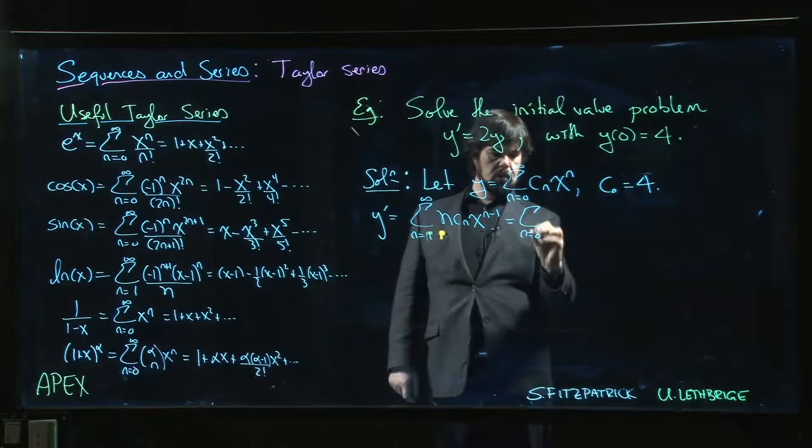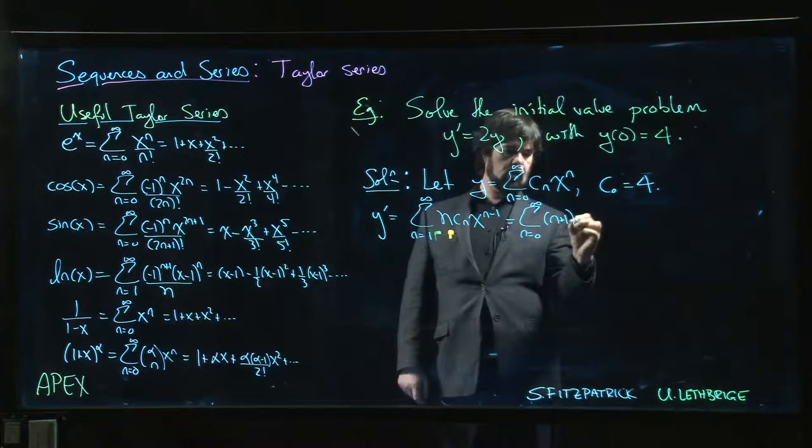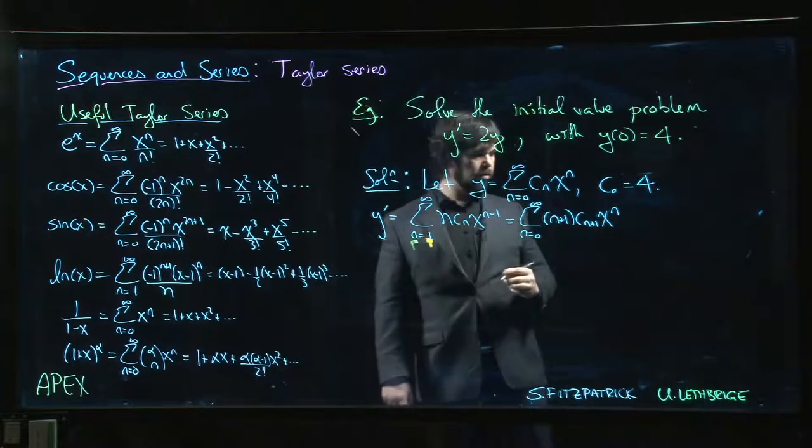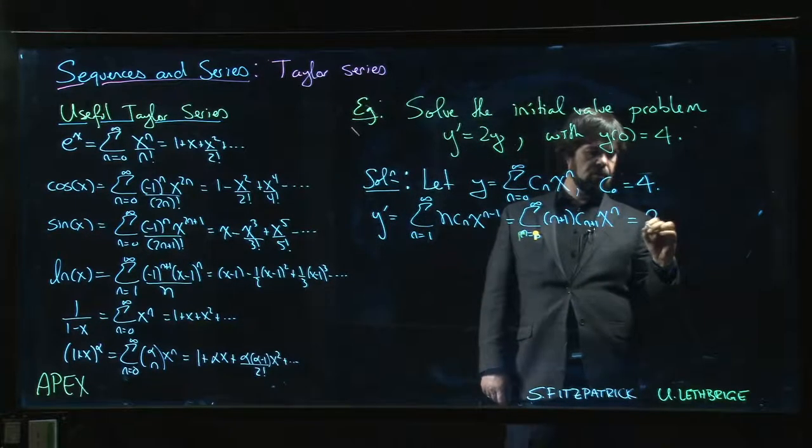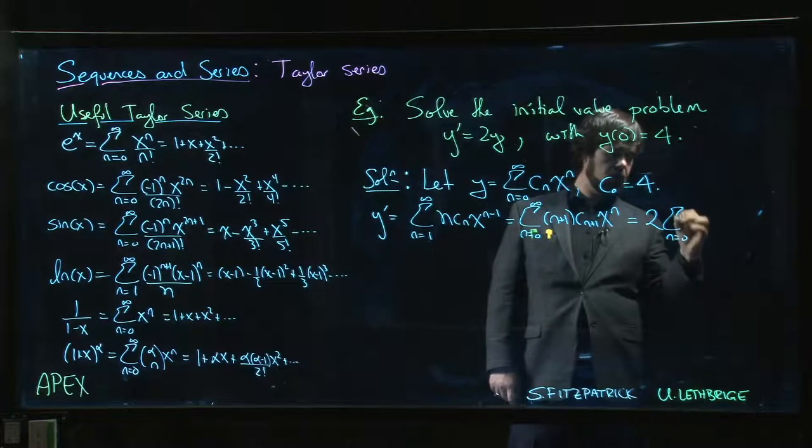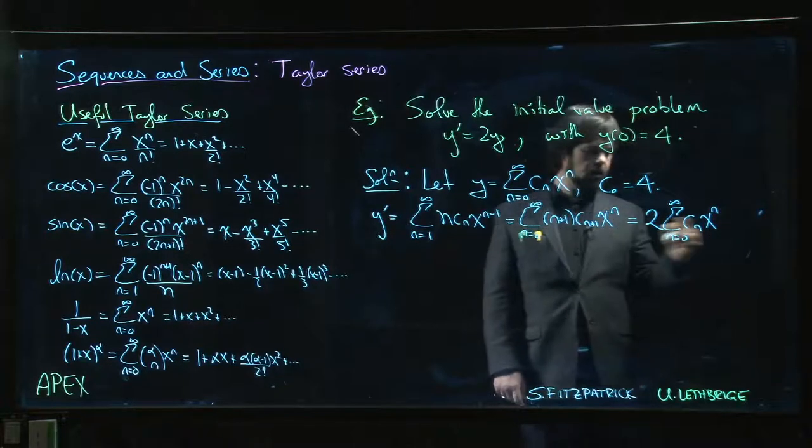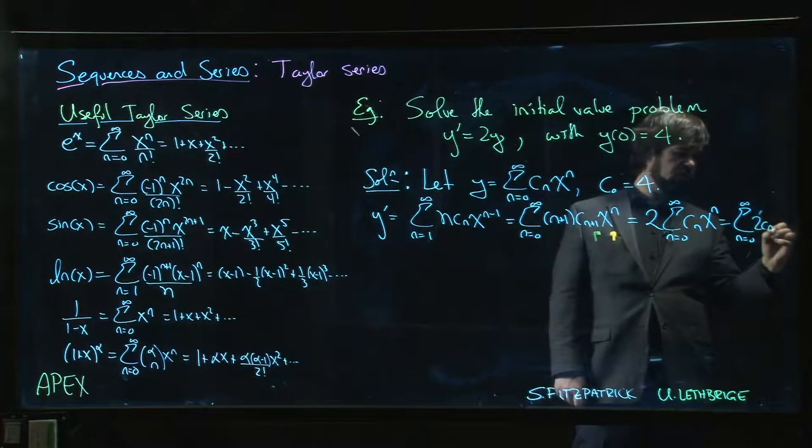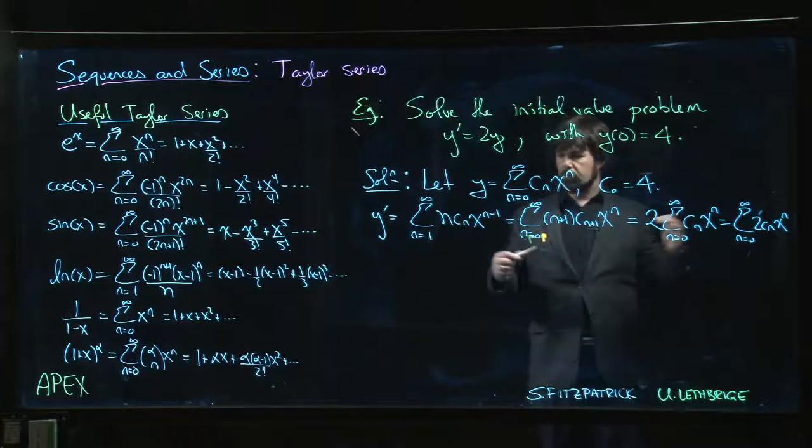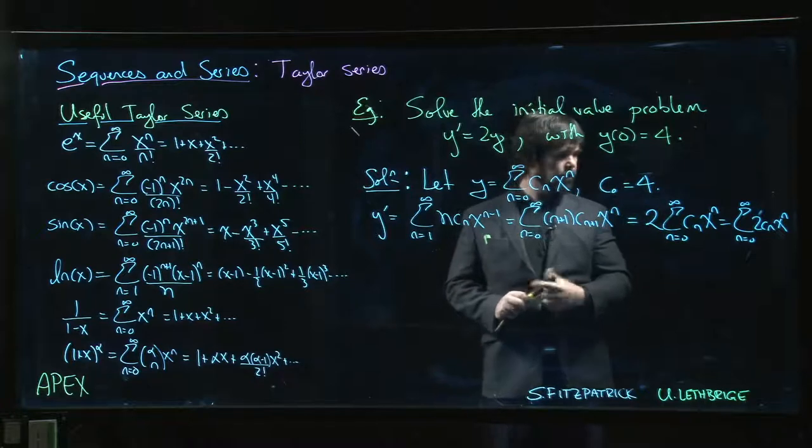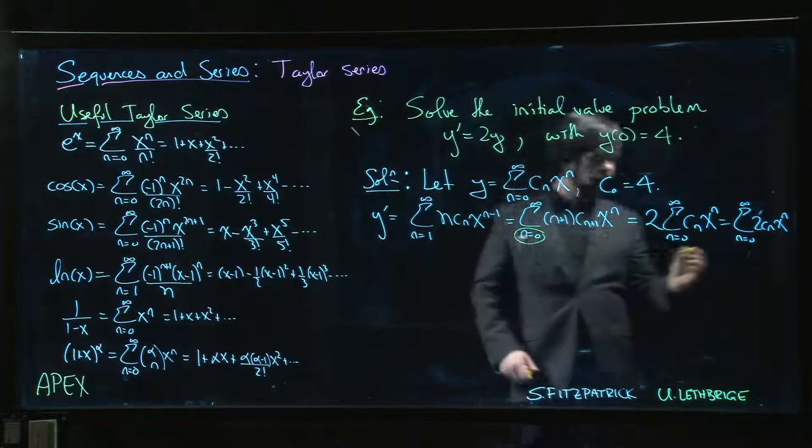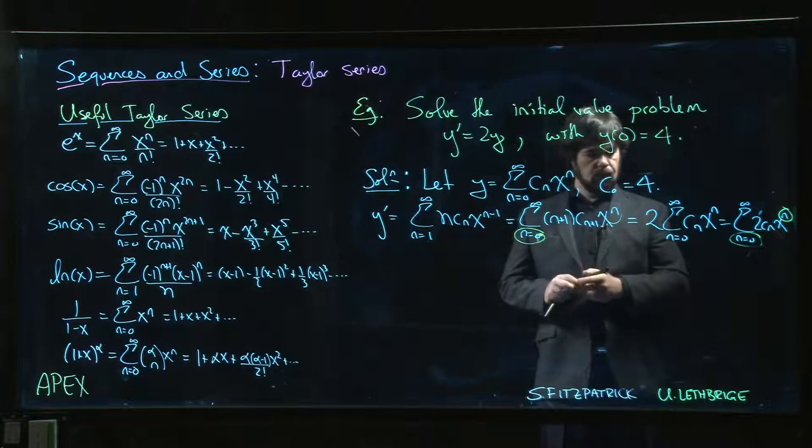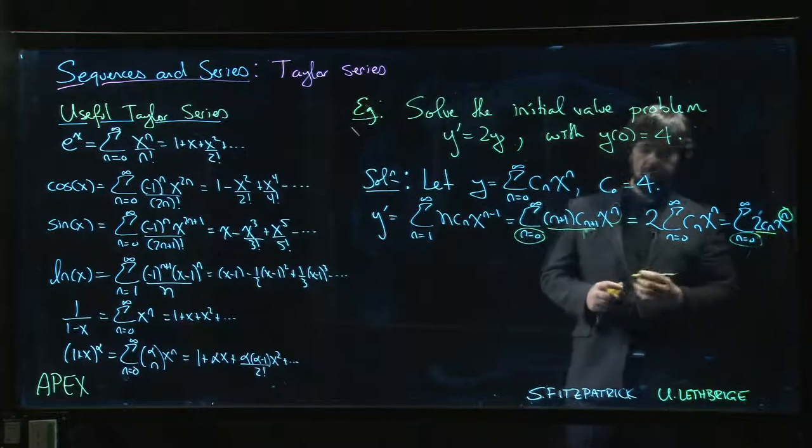So I can write that as the sum n going from 0 to infinity (n+1) c_(n+1) x to the n. But on the other hand, y prime is supposed to be equal to 2y, so this is supposed to be equal to 2 times the sum n going from 0 to infinity c_n x to the n. I can bring the 2 inside, so I can write that as 2 c_n x to the n.